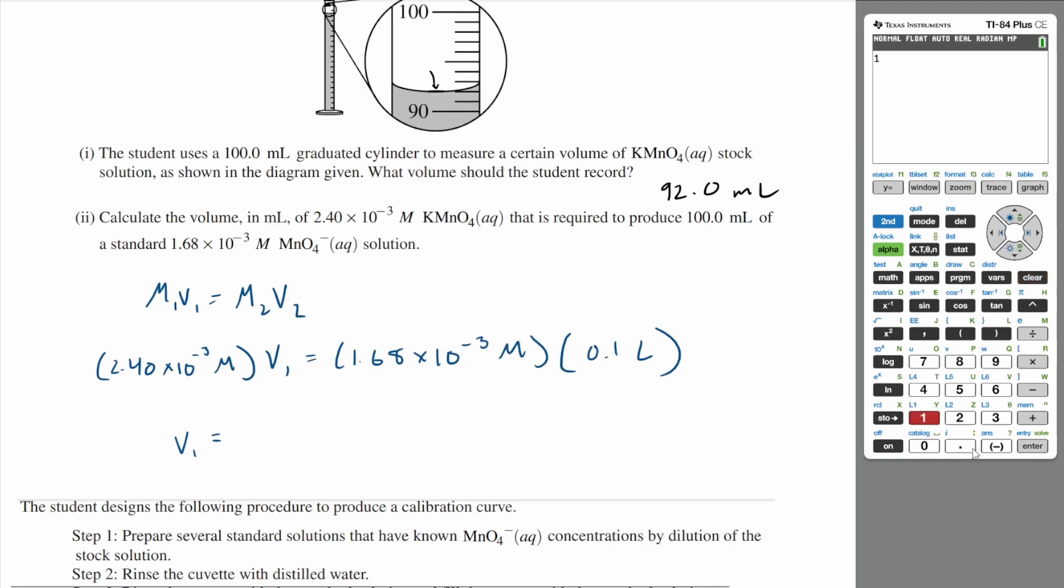So if you do the math, that's going to be 1.68 times 10 to the negative 3 times 0.1, and then we want to divide this entire thing by 2.40 times 10 to the negative 3.